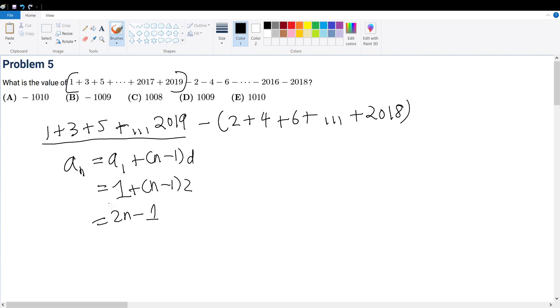In other words, the first term when n equals 1 would be 1, and when n equals 2 it would give me 3. So we know that this is the correct summation formula.